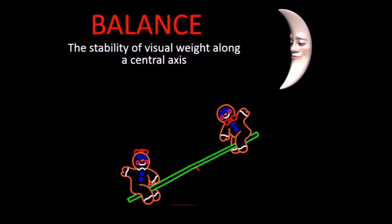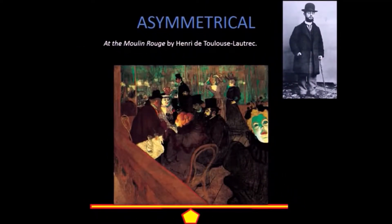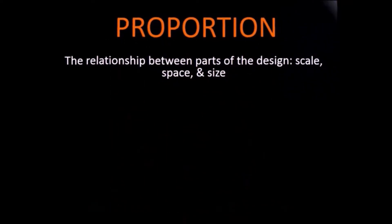Balance is the distribution of visual weight of objects, color, texture, and space along a visual axis. It might help to think of the work of art as being on a seesaw or teeter-totter. In symmetrical balance, the elements used on one side of the design are similar to those on the other side. In asymmetrical balance, the sides are different but still look balanced.